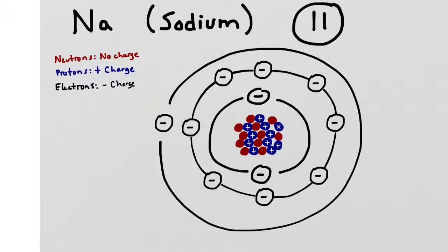Our outermost shell is going to contain that final electron, giving us 11 electrons total across three layers. What's going to be most important is this outermost layer, because the outermost orbital of electrons is what enables the atom to interact with other atoms.